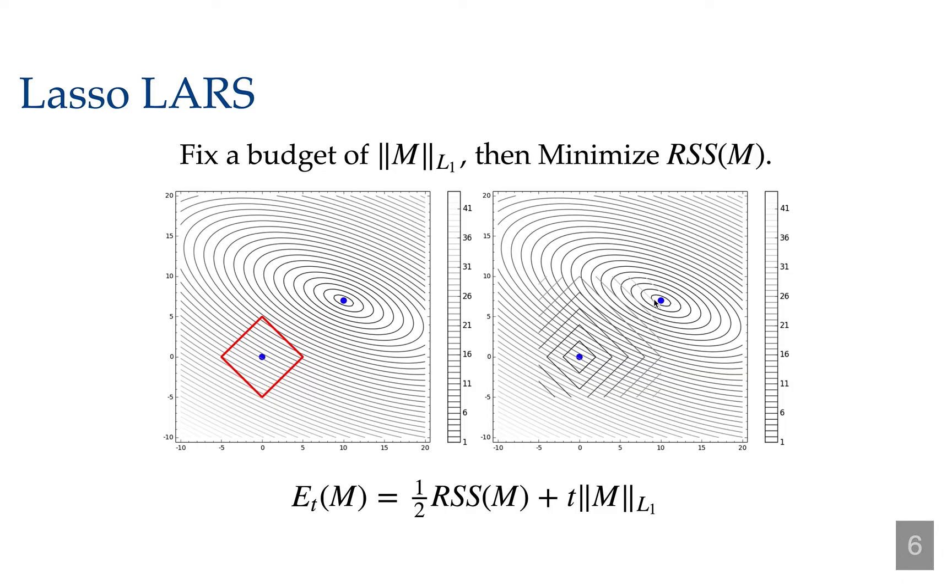You can imagine a naive way to do this. You fix a parameter t, and use Newton's method or something similar to solve the minimization problem, and then you adjust t and try again. That's extremely inefficient computationally and very time consuming.